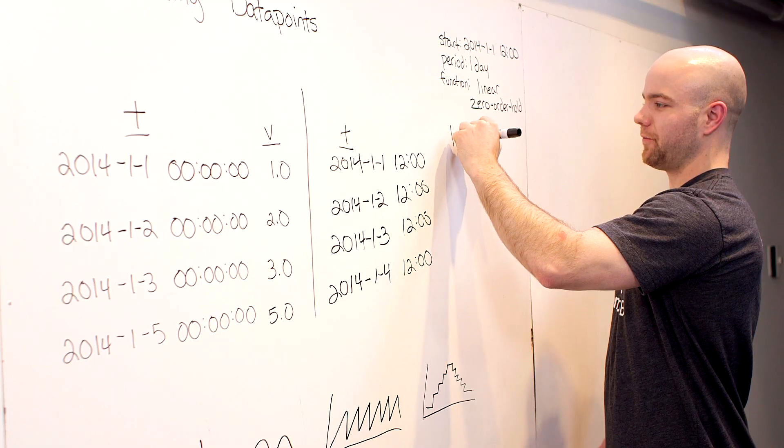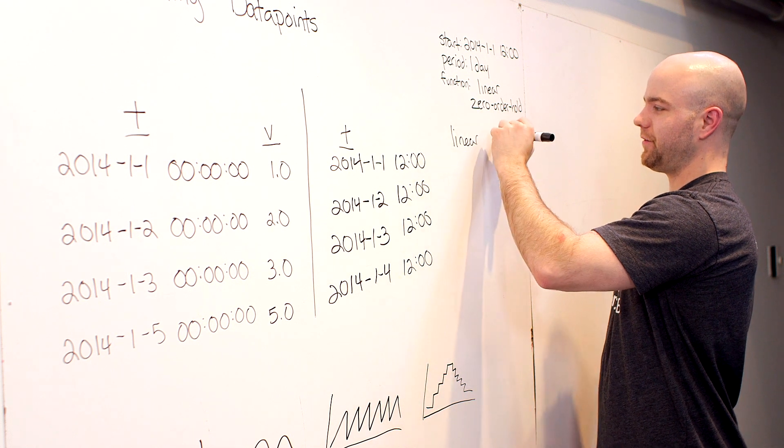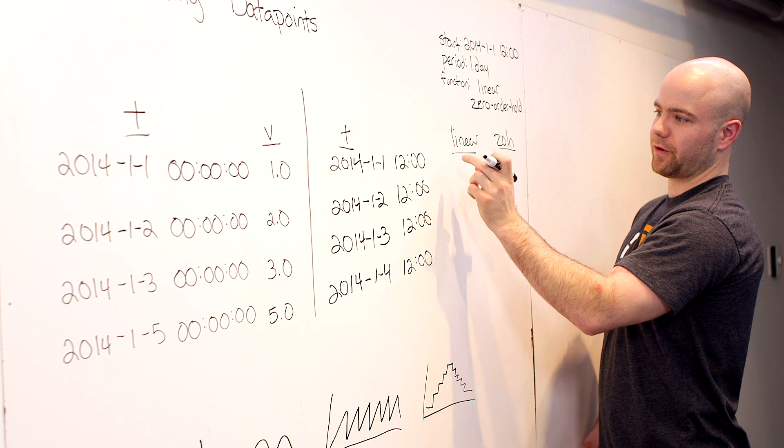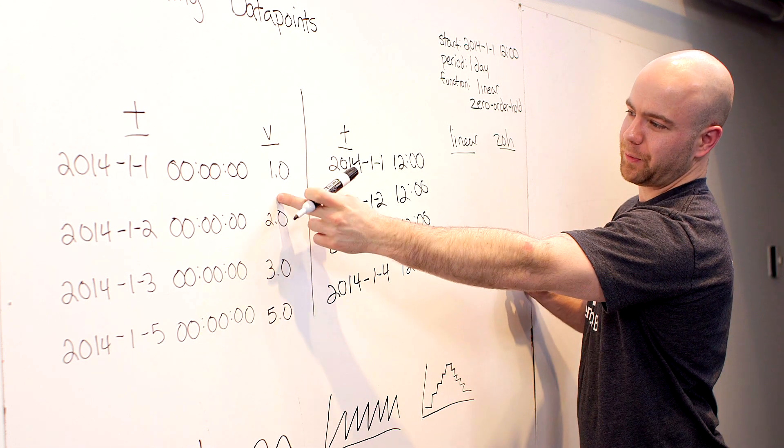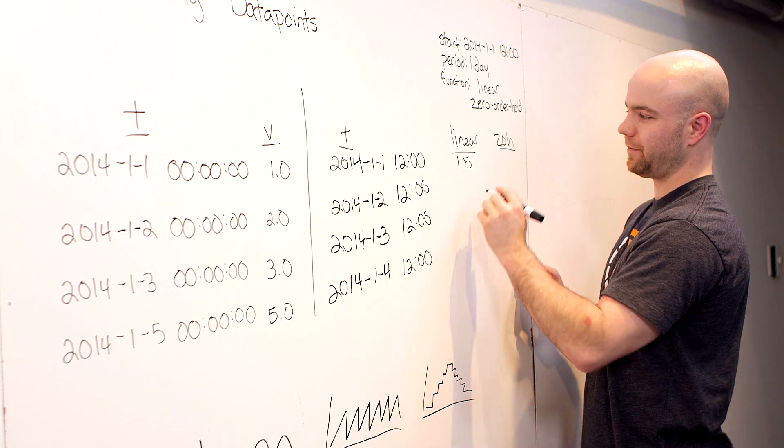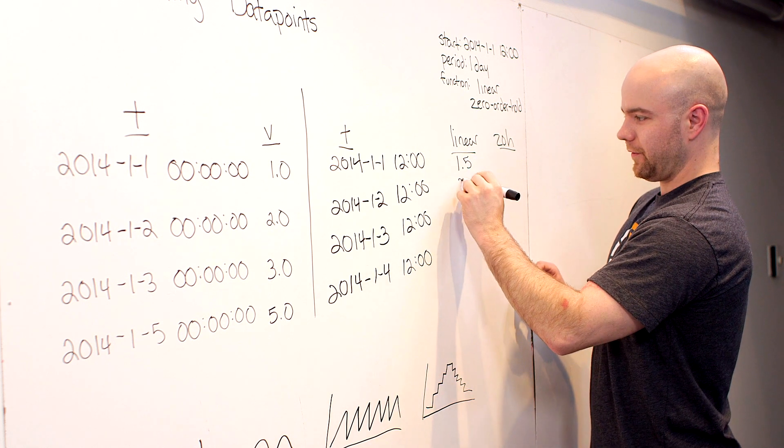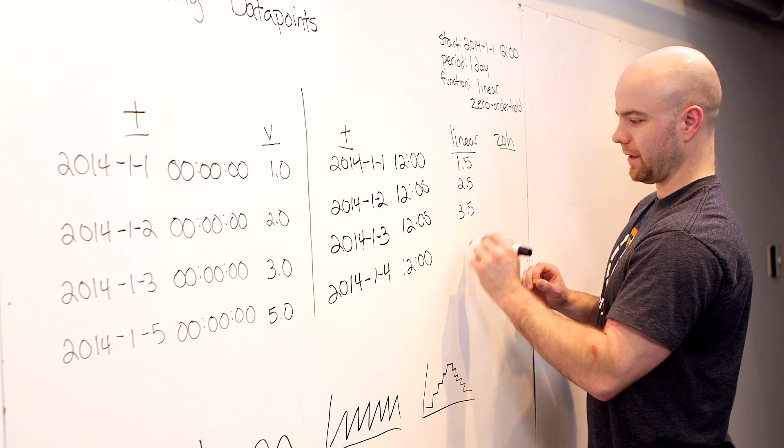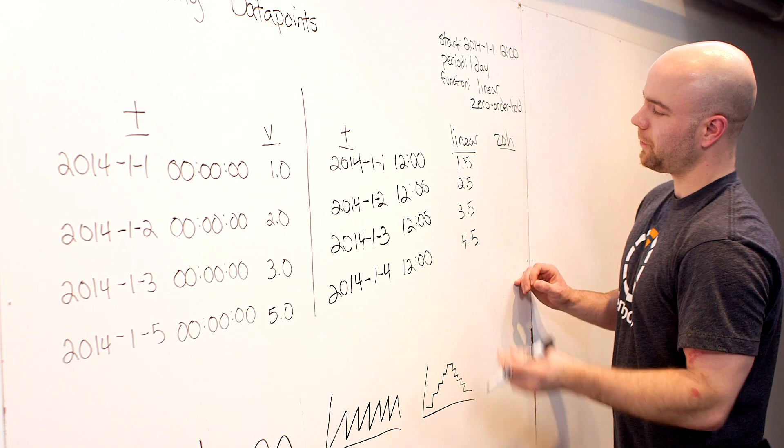I'm going to run through an example of what the values would be under each algorithm, just to illustrate. Here, we've got the halfway point between 1 and 2, so linear interpolation is going to give us 1.5, then 2.5, 3.5, and 4.5.